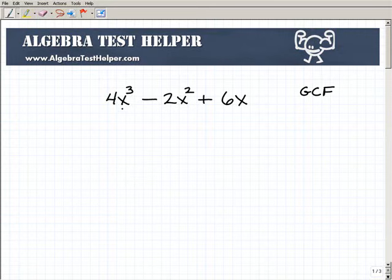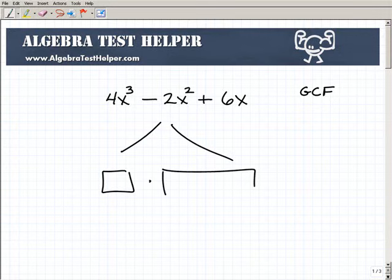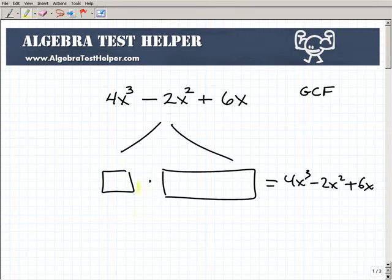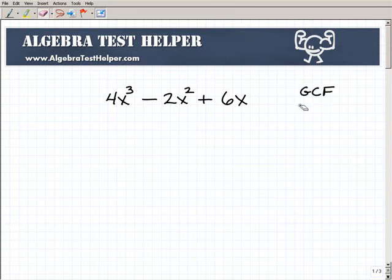So this right here is 4x cubed minus 2x squared plus 6x. What I'm looking to do is to factor in such a way where I have something times something else, and that's going to get me back to 4x cubed minus 2x squared plus 6x. That's the objective.